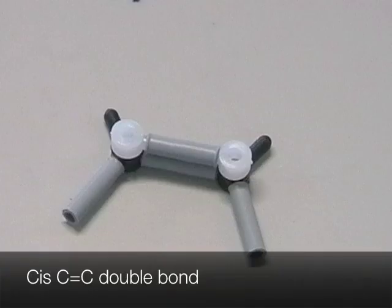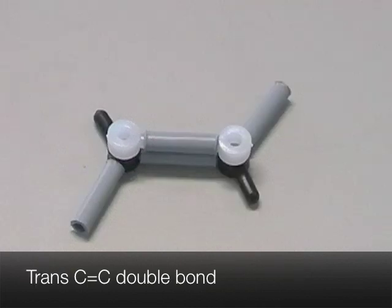A cis carbon-carbon double bond will result in a U-shaped conformation of the atoms, while a trans carbon-carbon double bond will result in a conformation of the atoms like this.